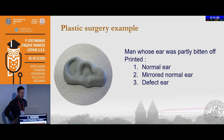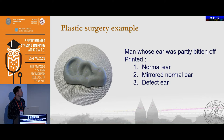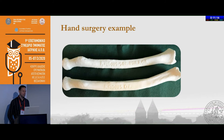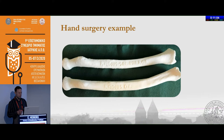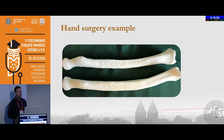We do some plastic surgery but not much. Here was a man whose ear was partly bitten off, so we printed the normal ear, the mirrored ear, and then the defect ear. For hand surgery, we are in the process of creating cutting guides to create the osteotomy — tools to actually perform the surgery so that you can cut according to the guide and when you put it together it will be exactly as planned.